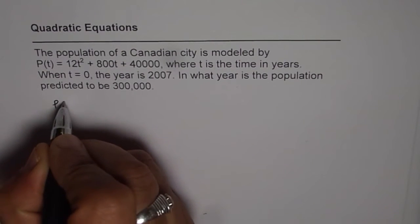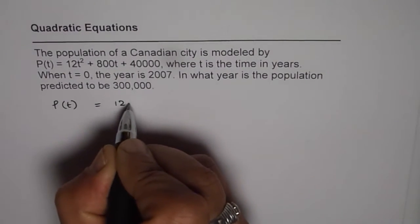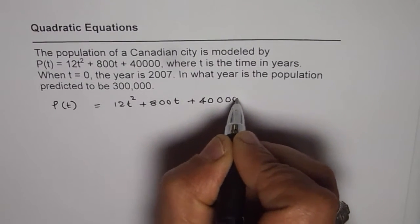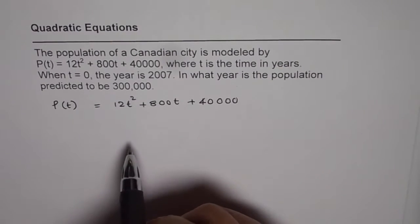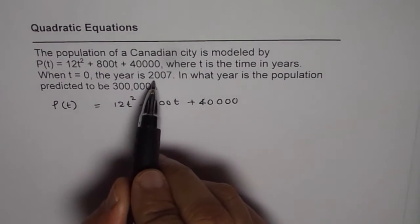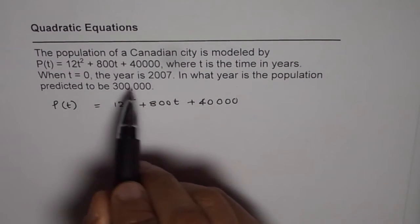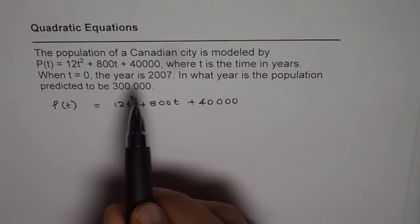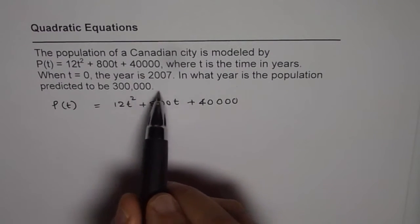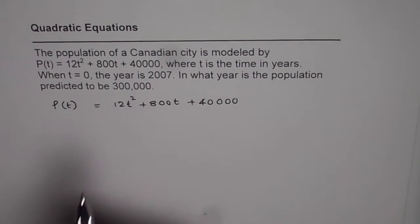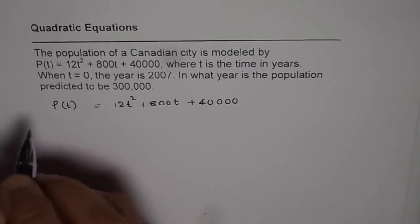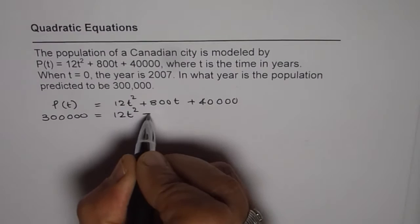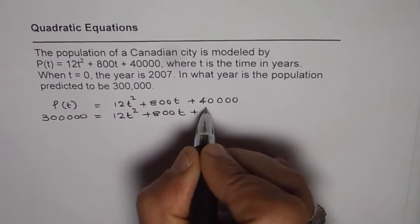So the formula is P(t) = 12t² + 800t + 40,000. That is the equation which represents population of a city. When time 0 means the year was 2007. So that means in 2007 the population was 40,000. Now we want to know in which year the population will be 300,000 if the growth rate is the same. So let's substitute 300,000 for P(t).